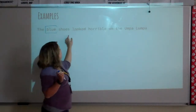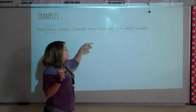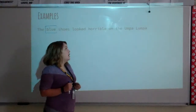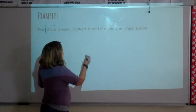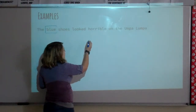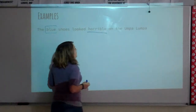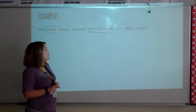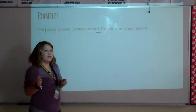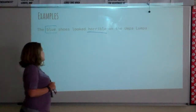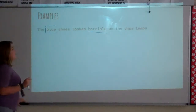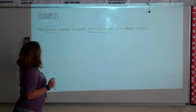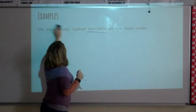They looked horrible on the Koopa Loompa. So we're going to underline our adjective here, which is horrible. So poor Koopa Loompa — he didn't have very good taste in shoes. Those are our two adjectives in this sentence.